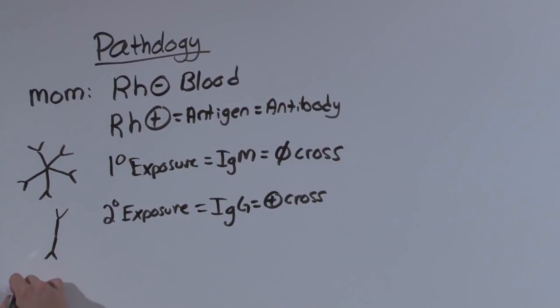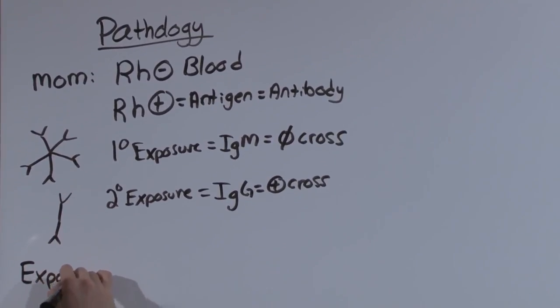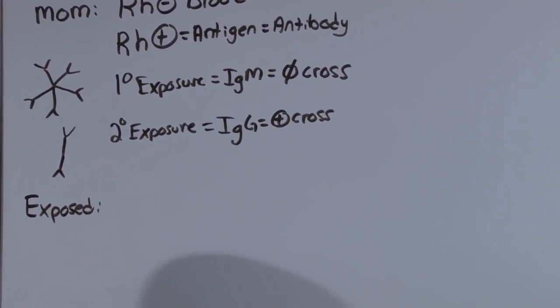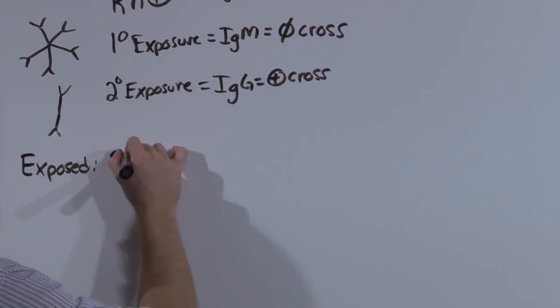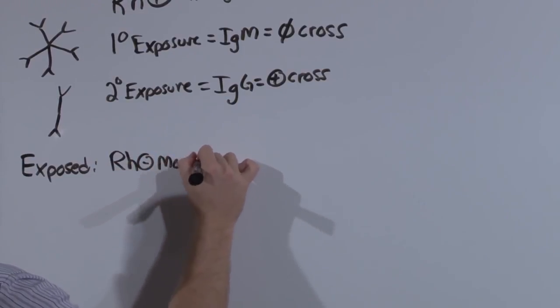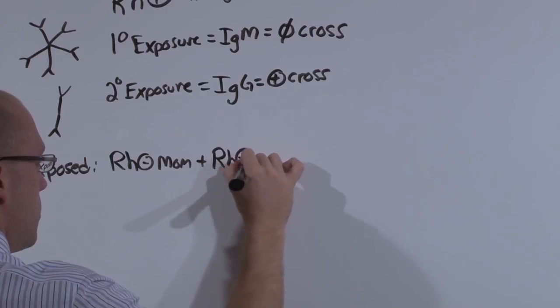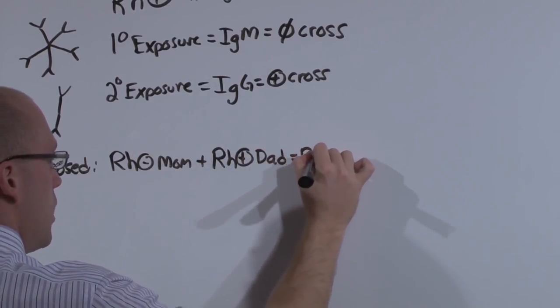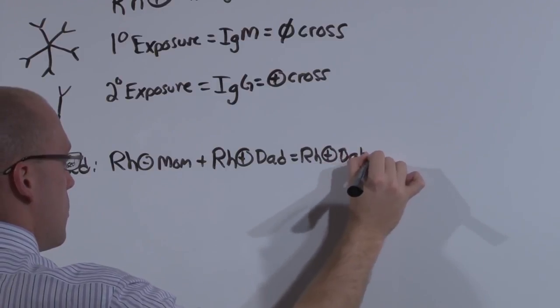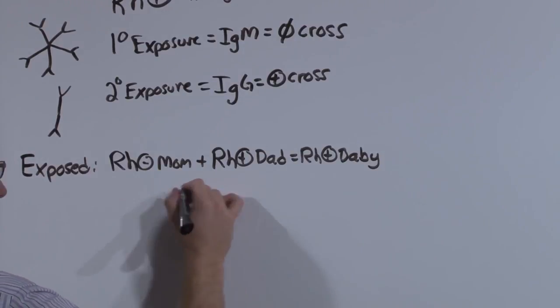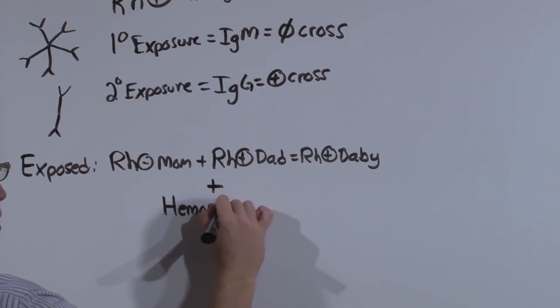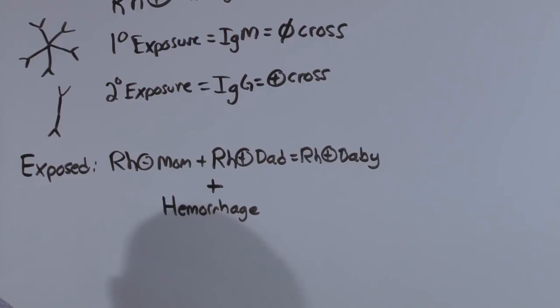How does mom get exposed? How does mom even know that that Rh antigen is there? Because she won't see baby's blood unless baby's blood gets into her circulation. So an Rh negative mom with an Rh positive dad has the potential for an Rh positive baby. That is, the fetus has Rh positive. Baby's cells have to get into mom, which means that in addition to this combination, you need some sort of hemorrhage, some sort of maternal fetal mixing.